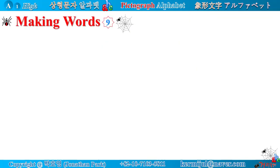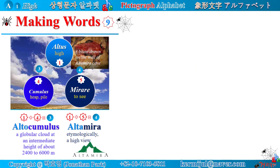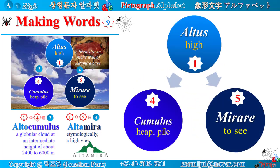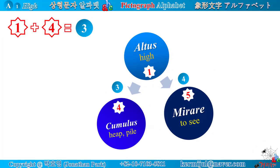Making Words number nine. You can see here three Latin roots: altus, cumulus, and mirare. Latin root altus means high, cumulus means heap or pile, and mirare means to see. Let's check how many words can be coined by using these three Latin roots. Star number one and star number four make the word altocumulus.